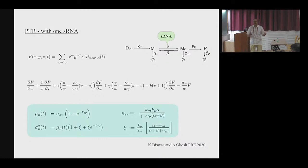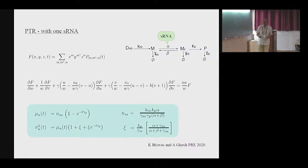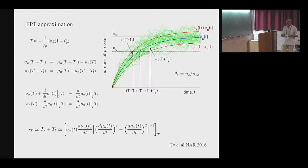Now, I started this talk by calculating the first passage time, but so far I have only given the mean and variance of protein numbers. Why am I not going there? Obviously there are difficulties — if I have to solve for the entire distribution and then compute the first passage time from the cumulative distribution, it's a nightmare. So I followed an alternative strategy: a graphical method, which is approximate but quite useful for our parameter regimes.